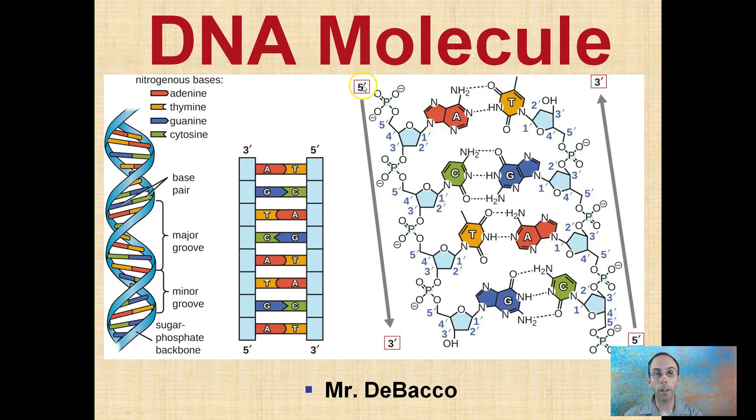Now you will notice arrows going from 5 down to 3 prime, and here again, 5 prime pointing to 3 prime, one pointing down, one pointing up. This is where DNA gets the term anti-parallel. We'll talk more about that when we do DNA replication.